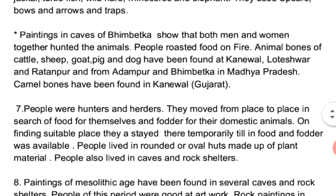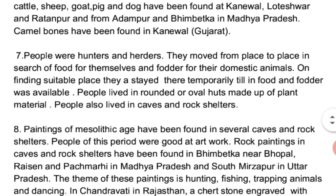Mesolithic people were hunters and herders — they domesticated animals but had to move from place to place in search of food for themselves and fodder for their domestic animals. On finding a suitable place where food for men and fodder for animals was available in sufficient amount, they stayed temporarily. When food and fodder availability decreased, they left and moved to another place in search of resources.